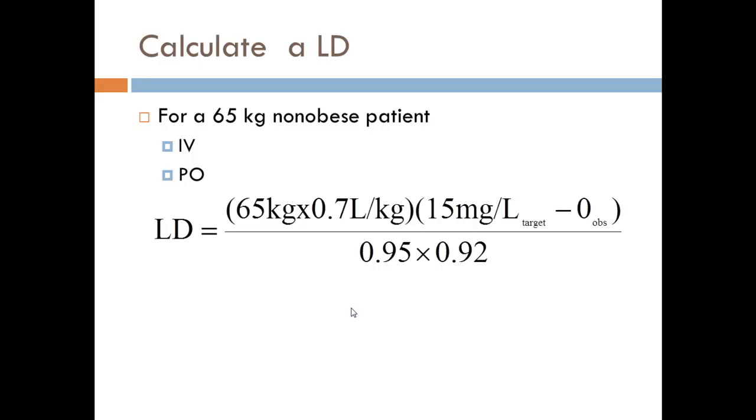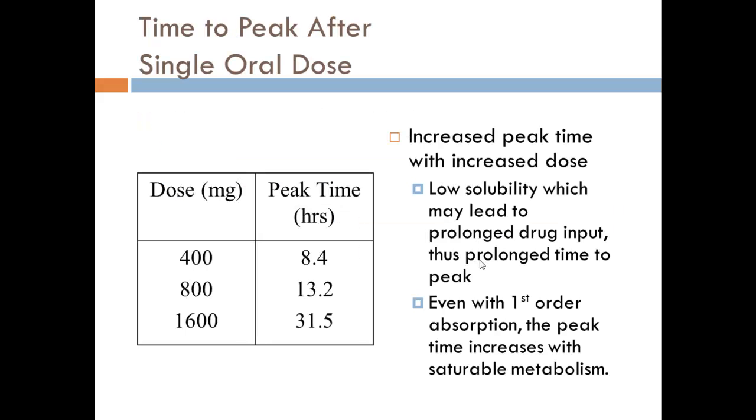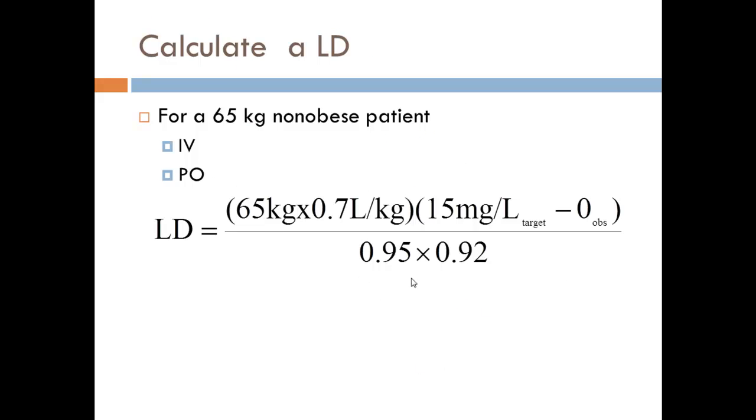If you have a 65-kilogram non-obese patient, we would just multiply 65 kilograms times 0.75 liters per kilogram. If they had no drug on board and we wanted to hit right in the middle of the therapeutic range, we would multiply that times 15 milligrams per liter. That's pretty simple, pretty straightforward for calculating a loading dose.